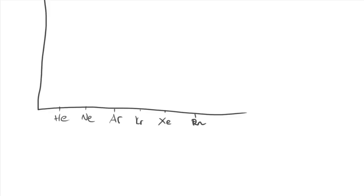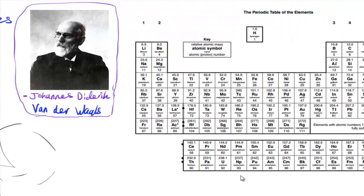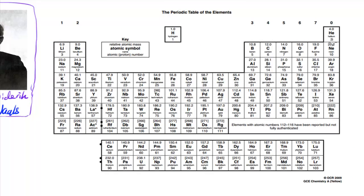Noble gases aren't bonded to anything and aren't polar molecules, so the only real forces acting between them are van der Waals forces. As the number of electrons increases, the strength of these van der Waals forces also increases. Also, if you have a large long molecule with a large surface area, van der Waals forces can arise in different parts of that molecule — which is why long-chain hydrocarbons like bitumen have really high boiling points.